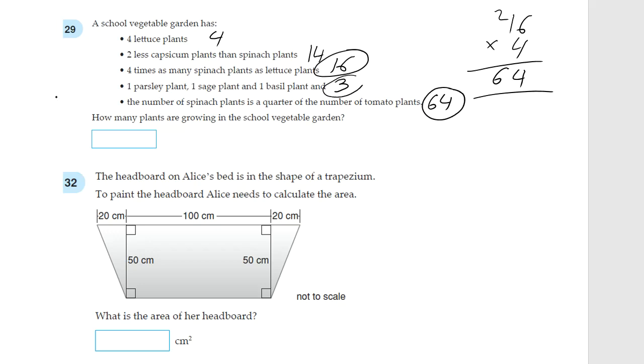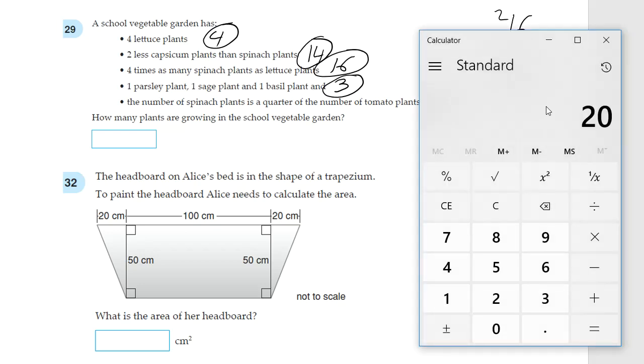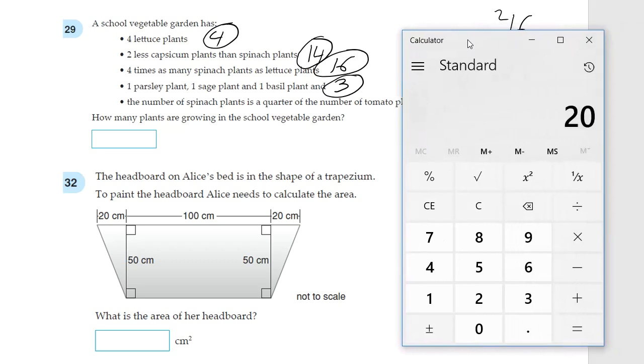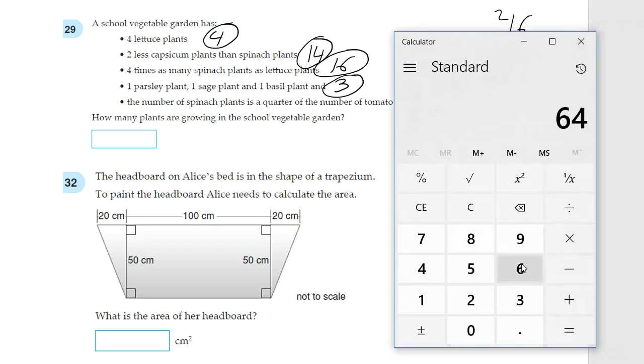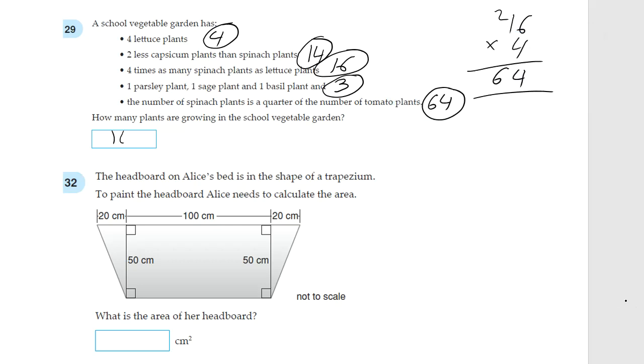Now, we need to add all these numbers. Let's quickly do that. 64 plus 3 plus 16. We'll just go from the bottom up. 14 plus 4 equals 101. So, that is our answer.